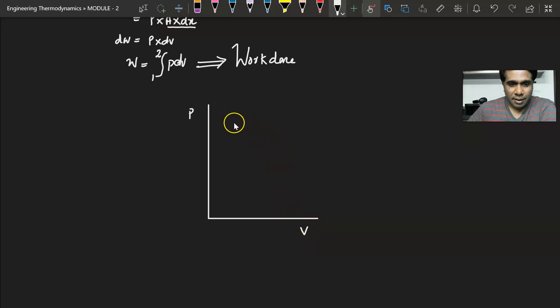And let us say there is an initial point 1 and a final point 2. So I can say that the initial pressure is P1 and the final pressure is P2, initial volume is V1 and final volume is V2.